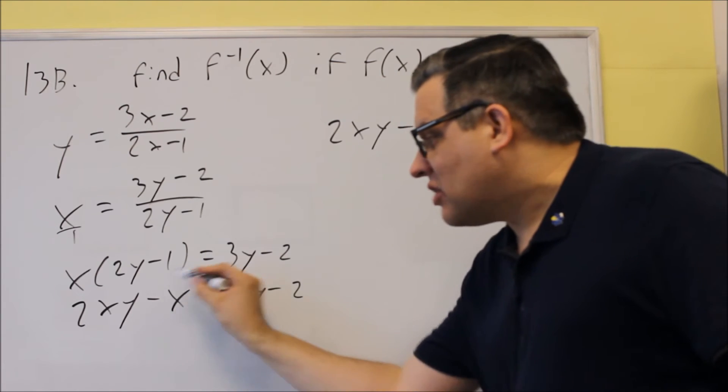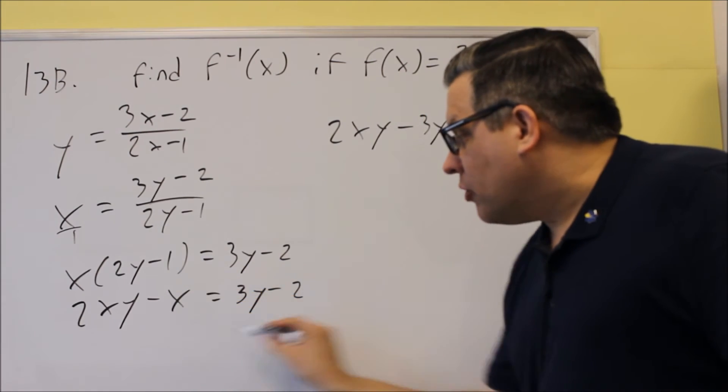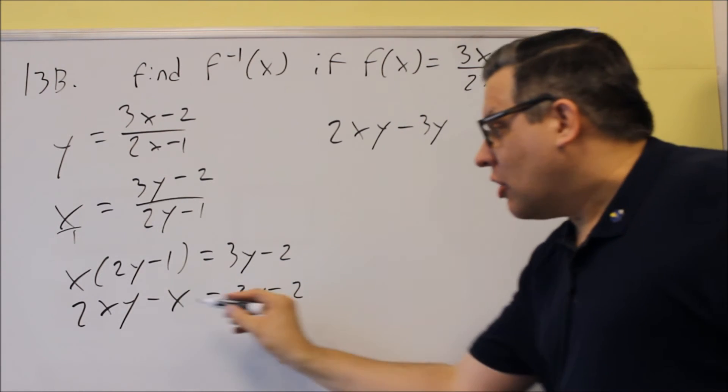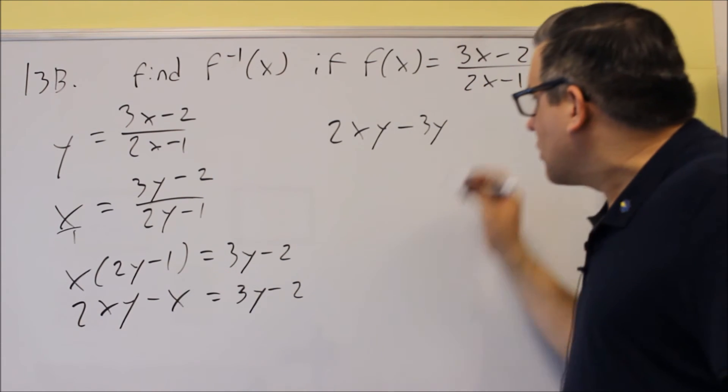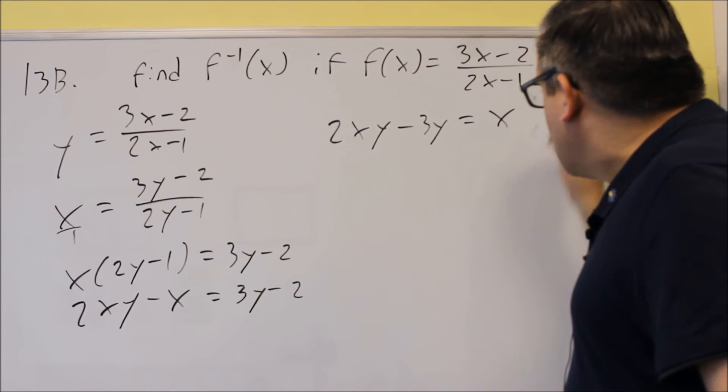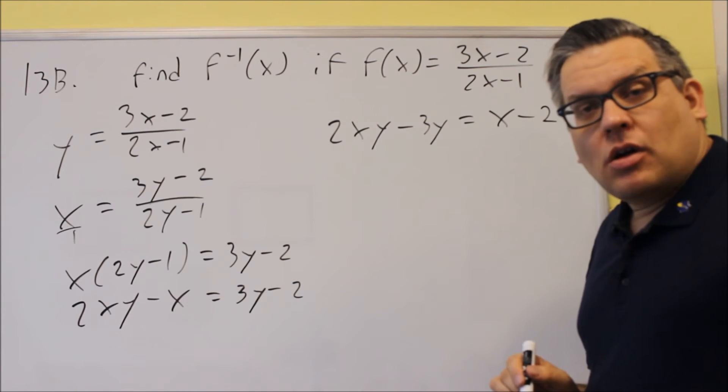Now the x that's here, since it doesn't have a y in it, I want to move that one over to the other side of the equation. So if I move that across to the equal sign, it changes signs, so it was negative x. It's going to become positive x. So I have a positive x minus 2.